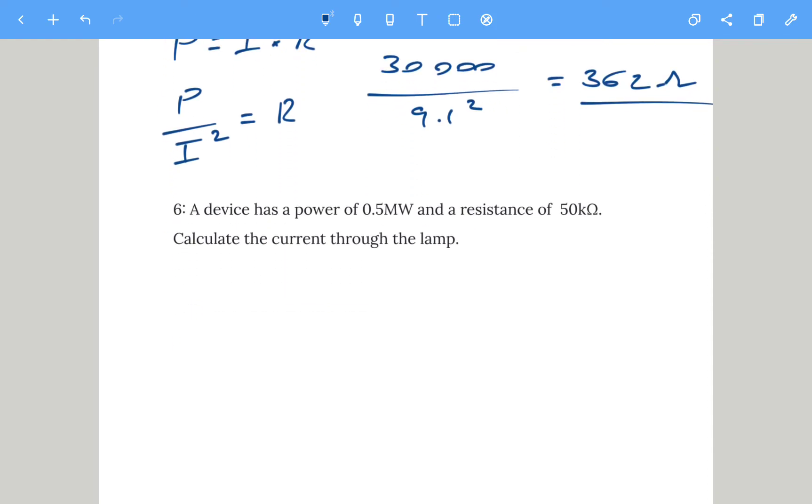Let's do the final one. If you want to pause and have a go at this one. The device has a power of 0.5 MW, so capital M means megawatt, which is a million. You could write 0.5 times by a million and calculate it, or you could simply do 0.5 mega, which is times 10 to the power of 6 watts. Same answer, completely up to you. And the resistance of 50 kilo ohms. This time we're going to calculate the current.